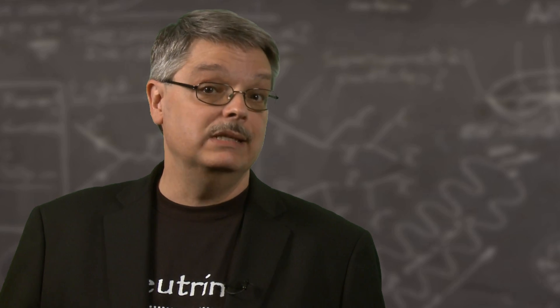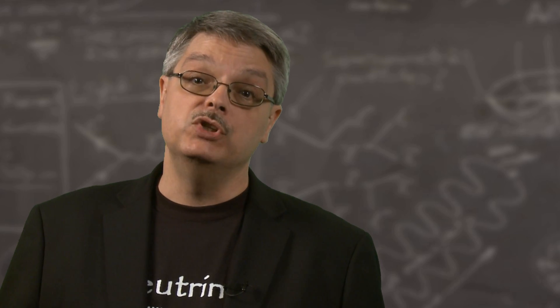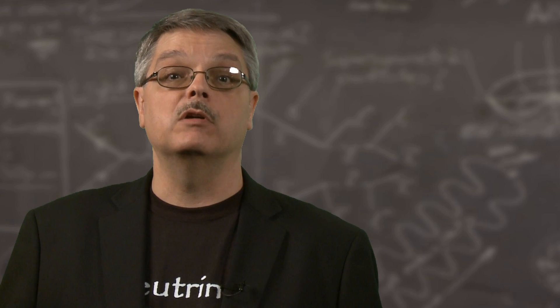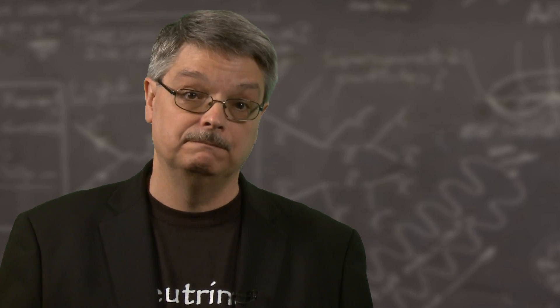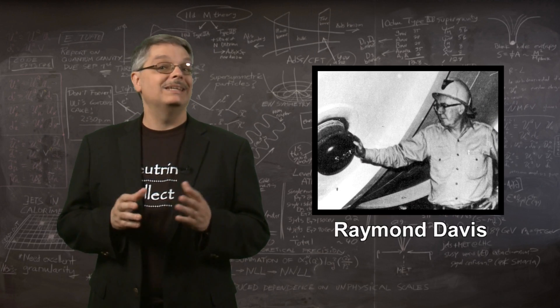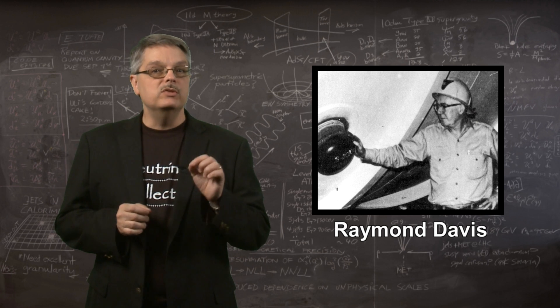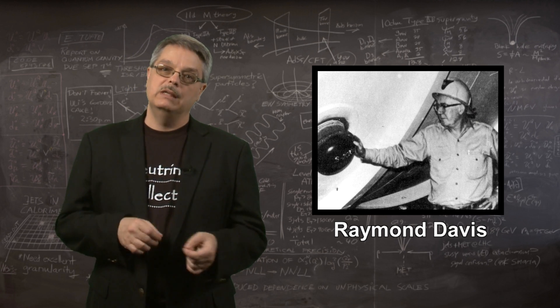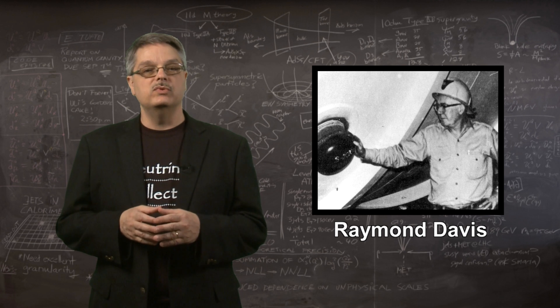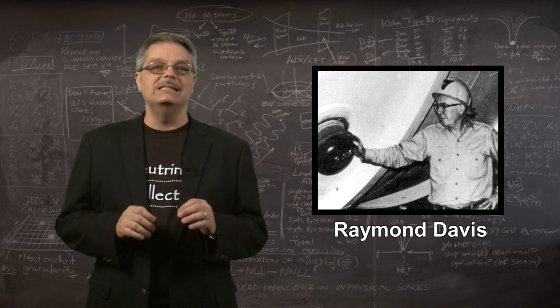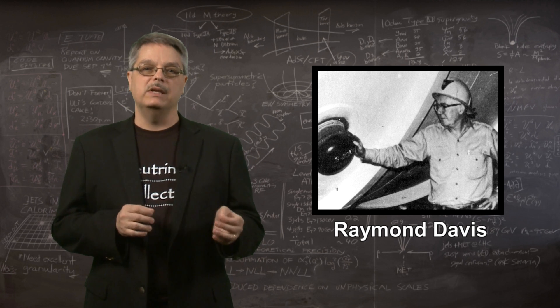In 1964, one scientist wanted to study neutrinos originated in the biggest nuclear reactor around, the Sun. Raymond Davis was a chemist by trade. He knew that neutrinos could interact with chlorine and make argon. He also knew that neutrinos interacted very weakly and he'd need a huge number of chlorine atoms to make it work.